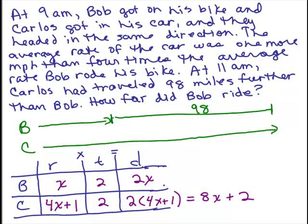Let's put these distances up here on the picture showing their distance. Bob's distance is 2X and for Carlos we've got 8X plus 2. Now we look at the picture to see if we can make an equation. If we take how far Bob rode plus this extra 98 miles, he'd catch up to how far Carlos drove.